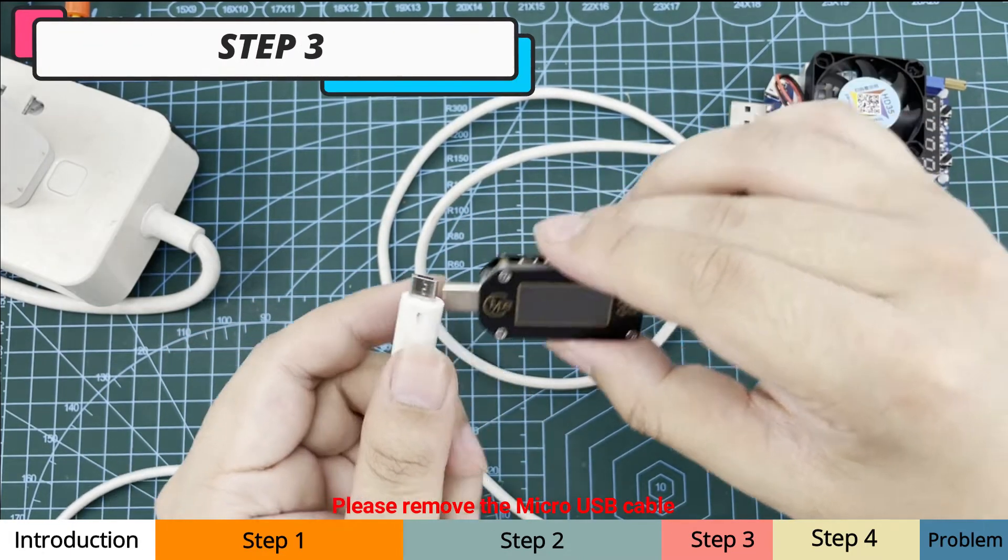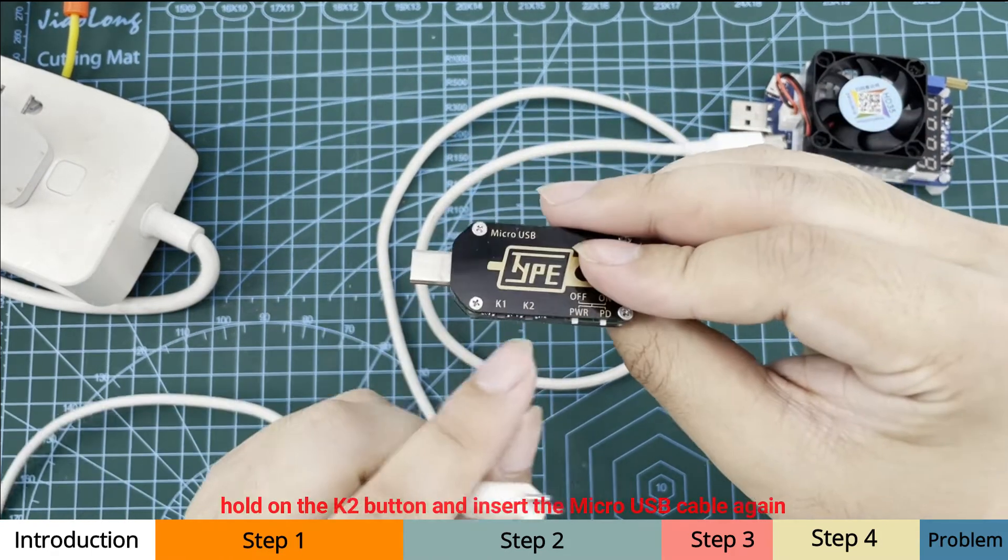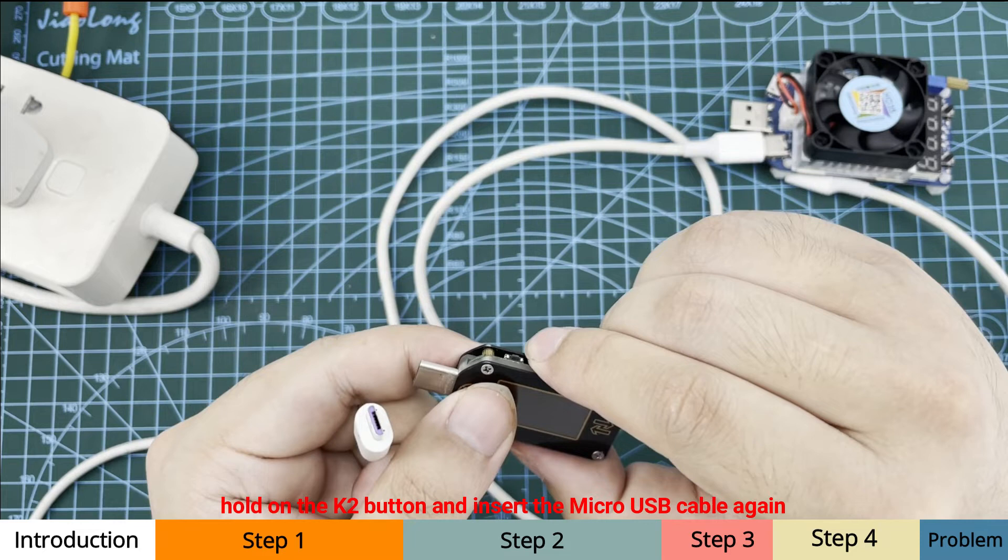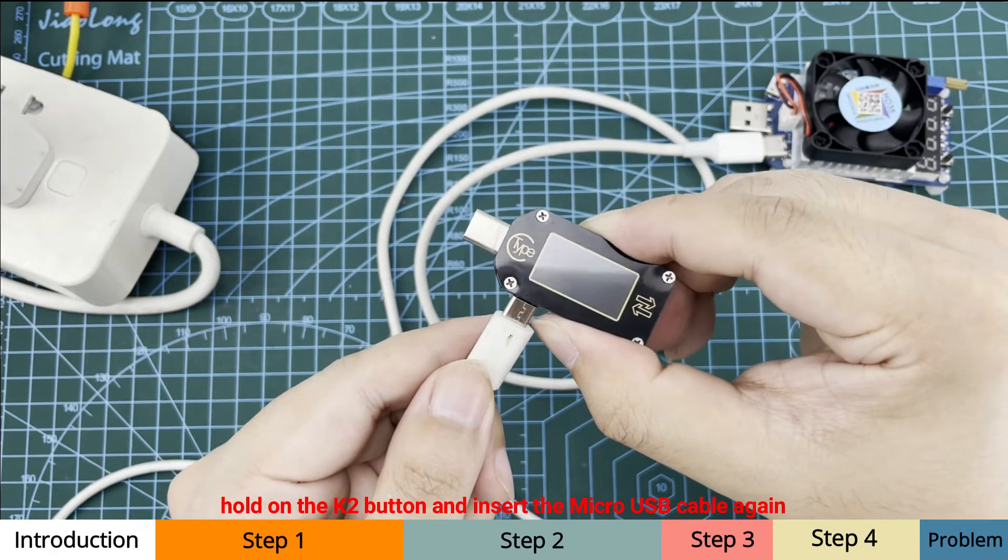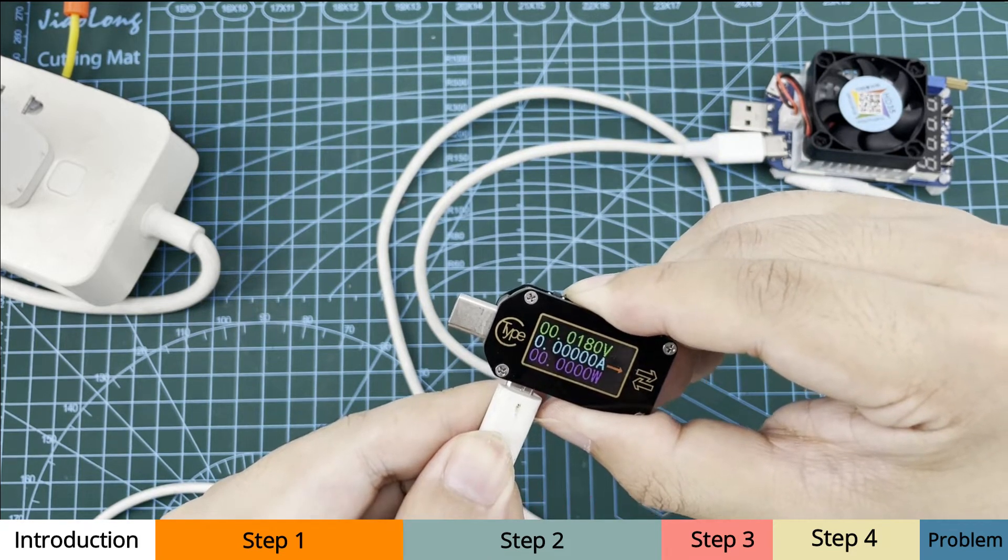Step 3, please remove the micro USB cable. Hold on the K2 button. Hold on the K2 button. Do not release your finger and insert the micro USB cable again.